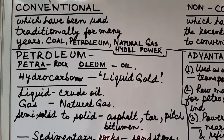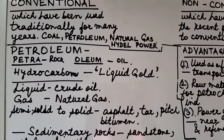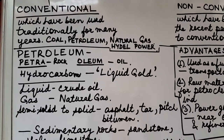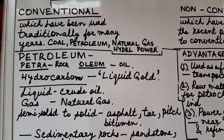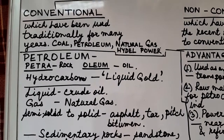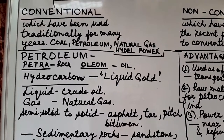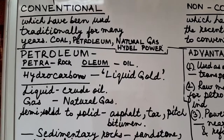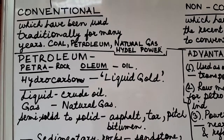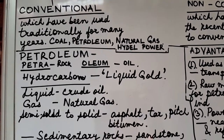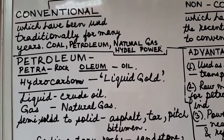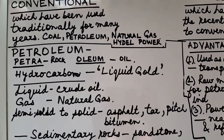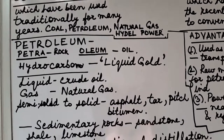Coal also gives out a lot of ash which is so light it is called fly ash, and disposal of this ash is a big problem. Secondly, petroleum has a higher calorific value than coal. So these are the points which give an edge to petroleum over coal.